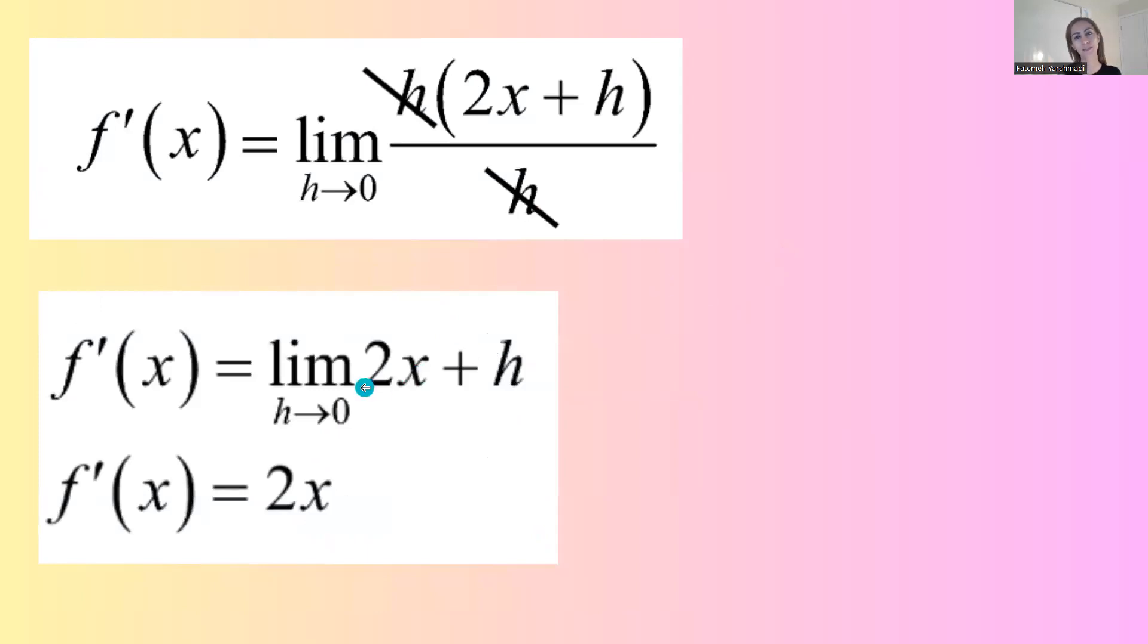But going back to the limit, since it's a linear combination, you are allowed to plug in 0 for your h and simplify this expression into 2x plus 0, or just 2x.